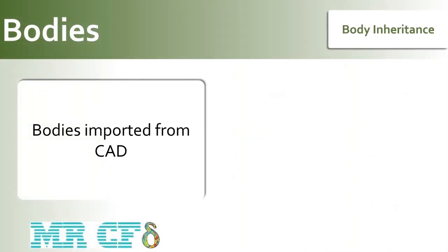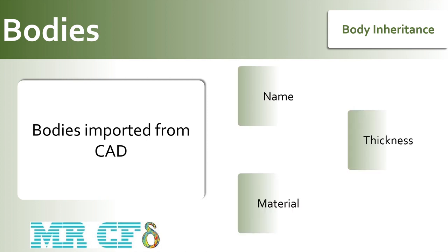Bodies can also inherit properties from their source CAD system or CAD file. The properties that can be inherited are name, material, and thickness. Not all CAD systems support the transfer of these properties. With name and thickness properties, they will inherit their values from the CAD system or file until you manually change them in the ANSYS DesignModeler application.